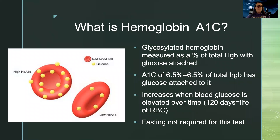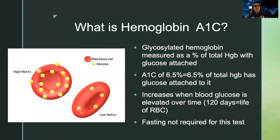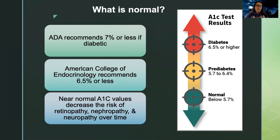The hemoglobin A1c is a test that effectively measures how much glucose is attached to your hemoglobin — and you can't cheat it. Since hemoglobin stays in your system for 120 days, it tells us how well blood glucose has been controlled over time. The patient doesn't need to fast, and they can't eat well for just one week before the test. The American Diabetes Association says 7% or less is the target, while the American College of Endocrinology says 6.5% or less. Generally, we want it less than 6.5%, as this shows how well diabetes is being controlled.